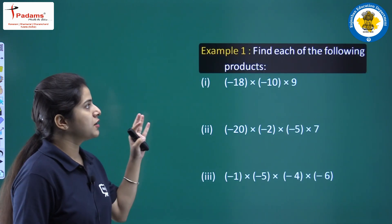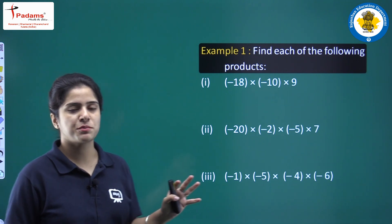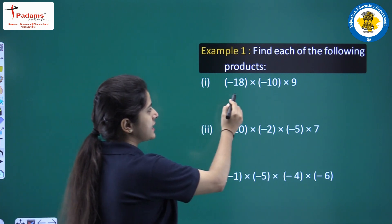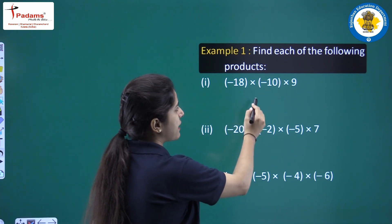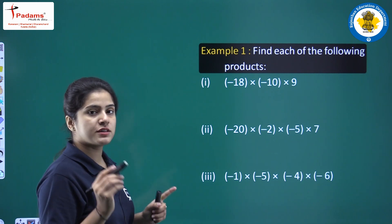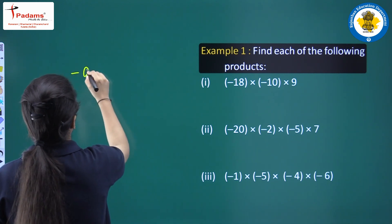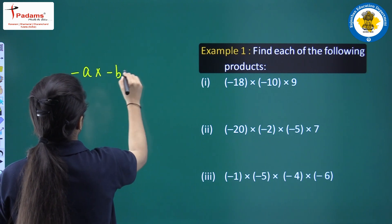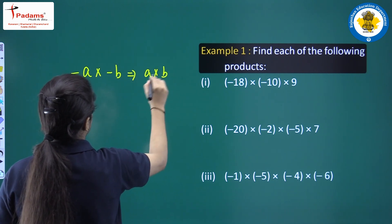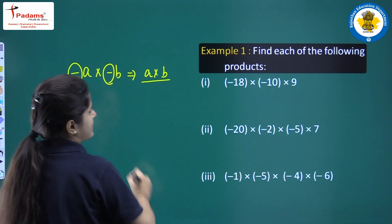First example: find each of the following products — you have to basically multiply. First part is minus 18 multiply minus 10 multiply 9. We have covered that minus a into minus b equals a multiply b, so minus and minus will cancel out each other.